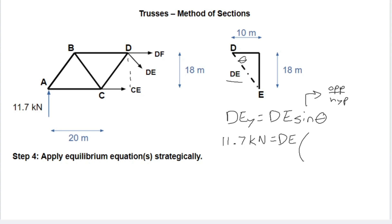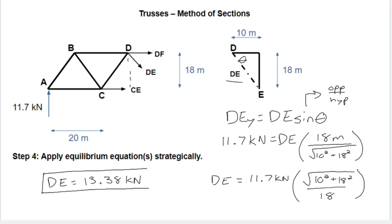The hypotenuse is the square root of 10 squared plus 18 squared. So really if we solve for DE, we're going to have DE is 11.7 kilonewtons times 10 squared plus 18 squared all over 18. And this will lead us to DE equals 13.38 kilonewtons. And now we've solved our problem.